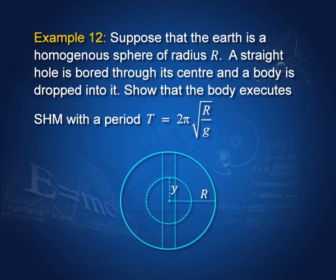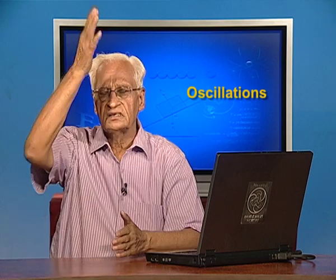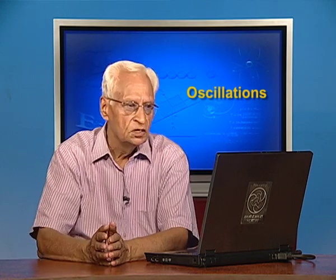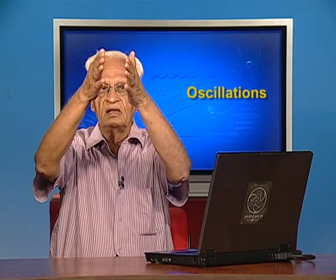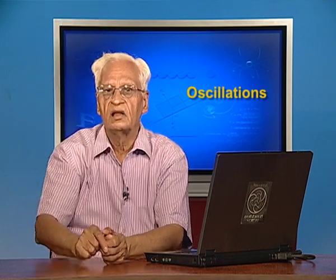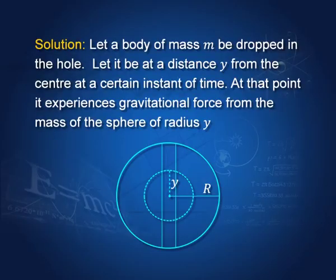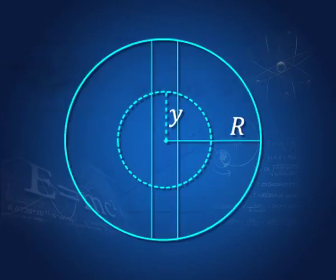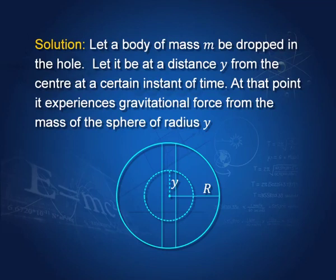Suppose the earth is a homogeneous sphere of radius R — that is, it has the same composition throughout, which is not true of the actual earth but we assume it. We drill a straight hole through the centre of the earth and shoot a particle of mass m through it. When this particle is at a distance y from the centre, the sphere of radius y has a certain mass that attracts the particle back toward the centre.